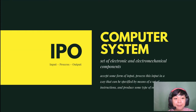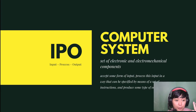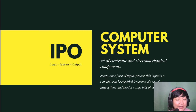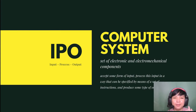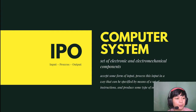Now let's move on to the IPO. IPO stands for Input Process Output. A computer system consists of a set of electronic and electromechanical components that are able to accept some form of input, process this input in a way that can be specified by a set of instructions, and produce some type of output.